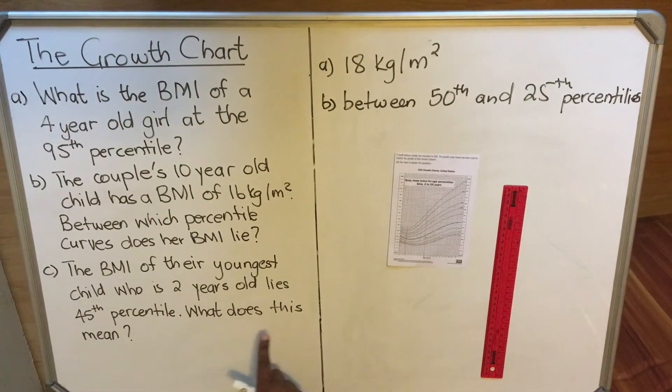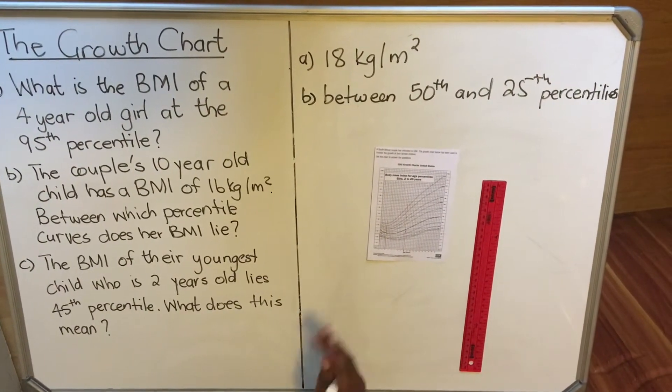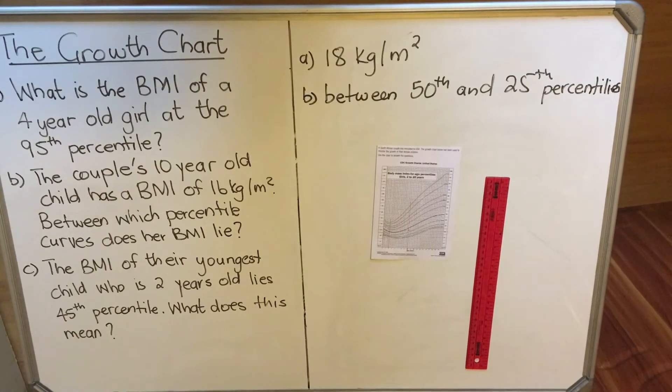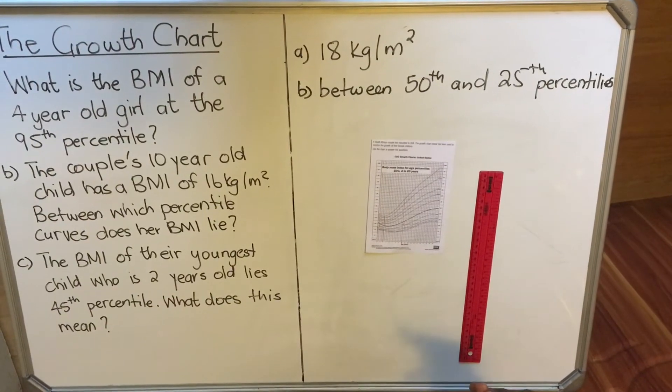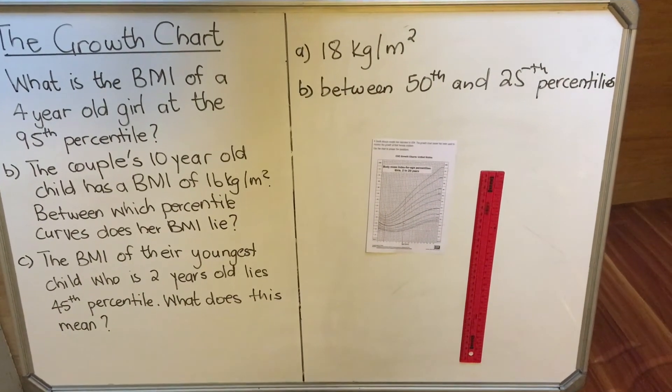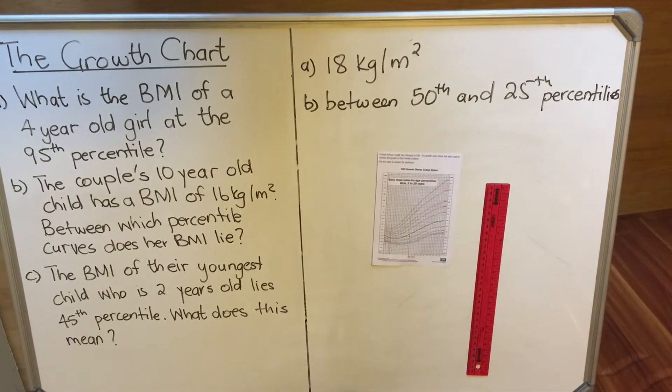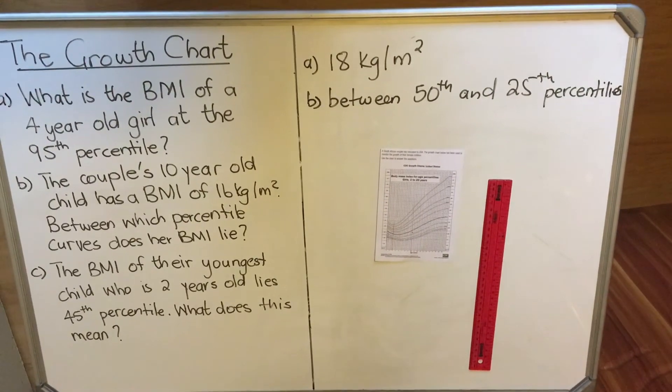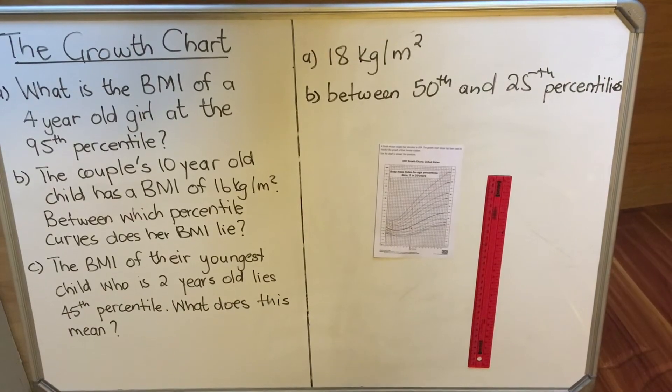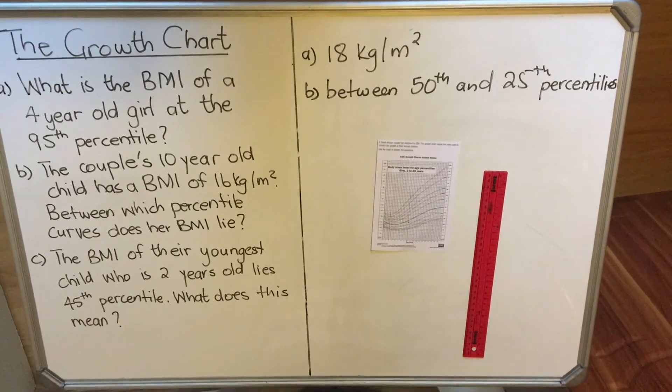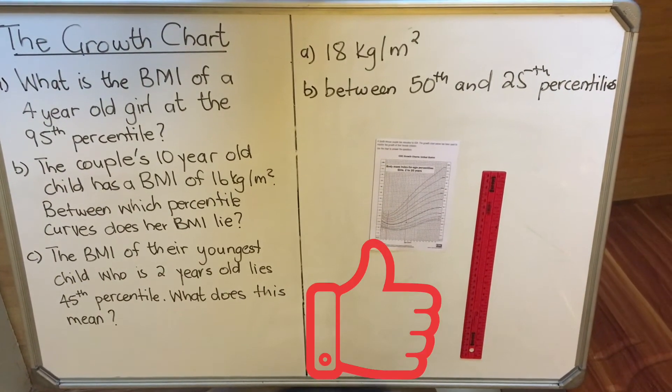They say the body mass index of their youngest child who is two years old lies in the 45th percentile. What does this mean? They want you to see your understanding of the child in the percentile. So if their youngest lies in the 45th percentile, what does it mean? It means the whole population is 100 percent, so 50th percentile is half of the population. So if this child lies within the 45th percentile, it means 55% of the children are above her body mass index, and then 45% of the children are below her body mass index, because she is in the 45th percentile.